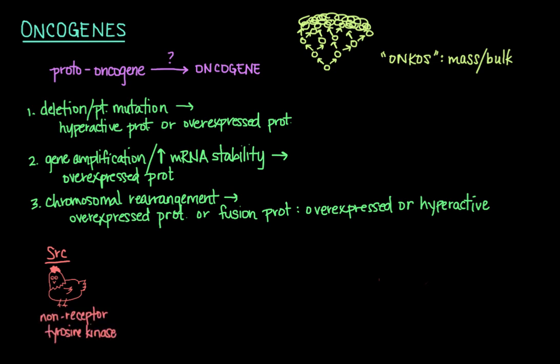Another example is the RAS oncogene, which codes for a small GTPase that hydrolyzes GTP into GDP and phosphate. This protein is activated by growth factor signaling and functions like a binary on-off switch in growth signaling pathways. Examples of downstream effectors of RAS include the protein MAPK, a type of kinase that regulates genes mediating cell proliferation. RAS oncogene mutations are seen in thyroid tumors, certain leukemias, and cancers of the pancreas and colon.